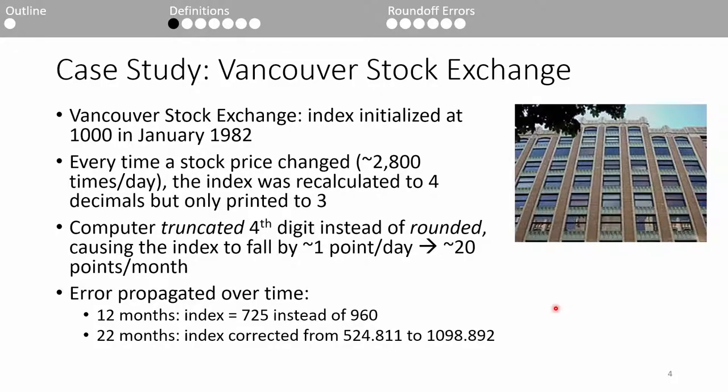The index ended up dropping by about one point a day, which built up to about 20 points in a one month span. And over 12 months, the index dropped to 725 when it should have been around 960. This was incredibly confusing for economists because they were actually setting records in the stock market. It also didn't line up with the rest of the world. Some other exchanges experienced positive changes in their index, so the folks in Vancouver knew something was awry. They contracted an independent firm to investigate, and that's when they uncovered the error. 22 months after the index was initialized, they manually corrected their index from about 525 to about 1100.